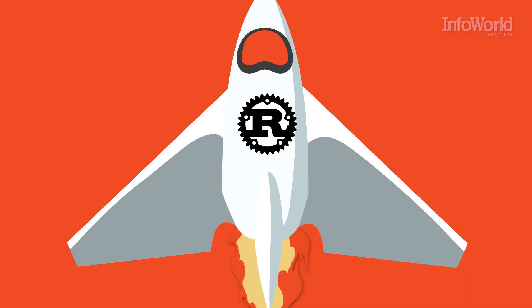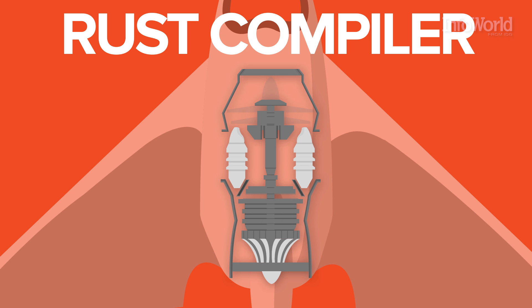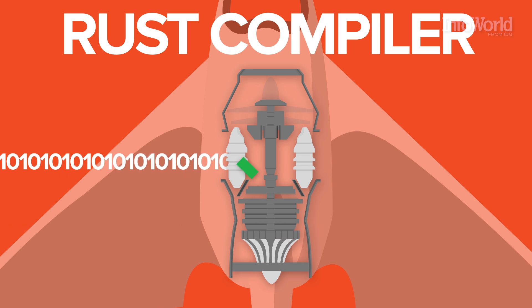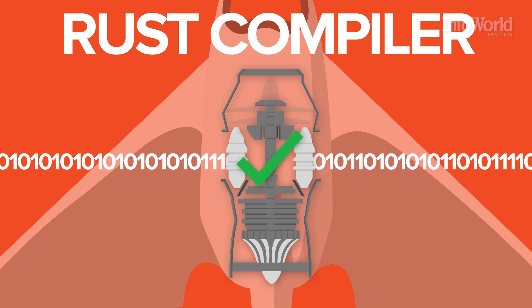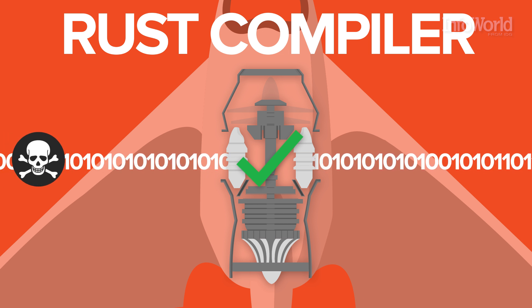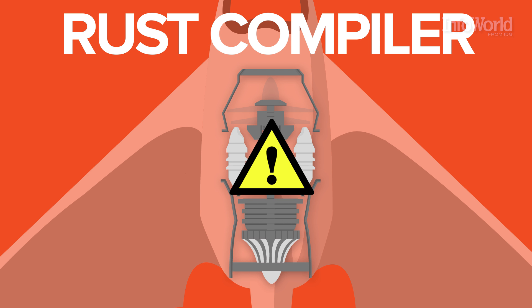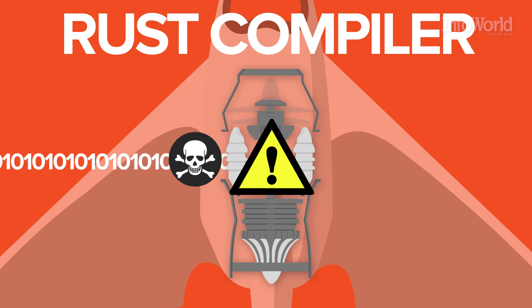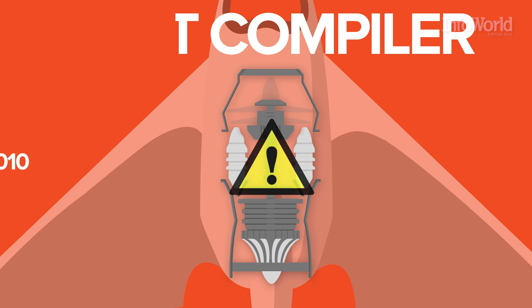In most languages, memory management problems show up only when you run the program. Rust ensures that problems with memory management are caught by the compiler before your program is created. If you try to write a Rust program that doesn't use memory responsibly, it won't even compile — it definitely won't run. This way, obvious problems with memory management never make it into production.